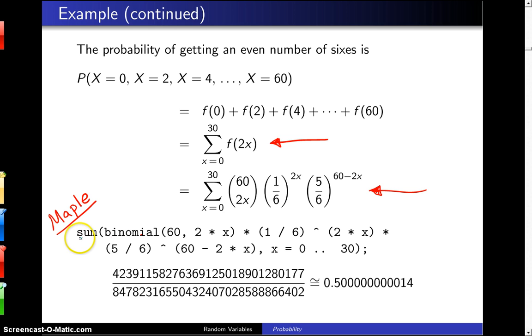So you begin with the Maple sum command, and what you're summing up is the binomial coefficient 60 choose 2x, multiplied by one-sixth raised to the 2x power, multiplied by five-sixths to the 60 minus 2x power. And that summation runs from x equals 0 up to x equals 30. The exact fraction is given right here, and when that is calculated as a floating point number, it is just slightly above one-half.